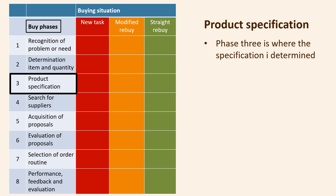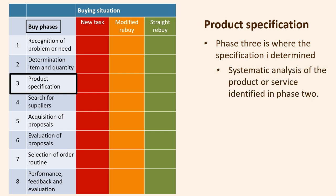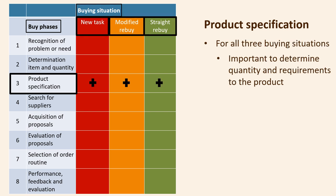Buying phase three is product specification, where the specification of the product or service is determined. In this phase, a systematic product analysis, a cost analysis, and other analyses of the product or service identified in phase two are carried out. For all three buying situations — new task, modified rebuy, and straight rebuy — it is necessary to determine the quantity and requirements of the specific product or service.